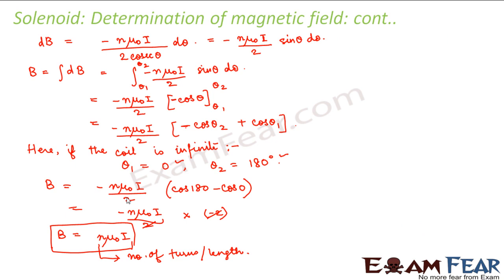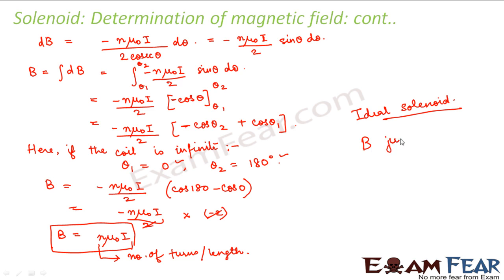So this is your magnetic field inside the solenoid. Now what is the magnetic field outside the solenoid? A solenoid is considered ideal if it does not produce any magnetic field just outside the solenoid when current is flowing through it. In real life there is some field outside, but for an ideal solenoid the magnetic field just outside is equal to zero.